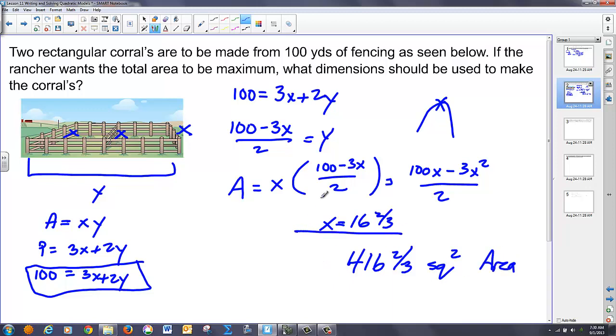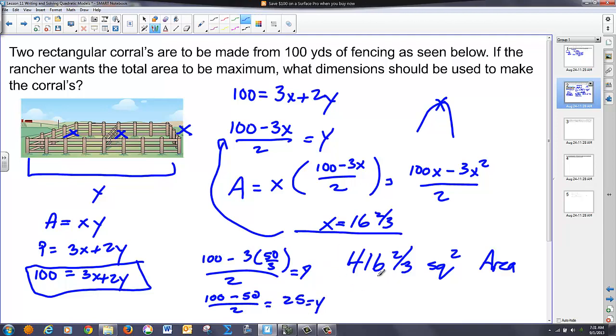They asked me for the dimensions so that's 16 and 2 thirds for the x and if I want the y I just have to plug that back in to this equation here. So what I have is I have 100 minus that's what 50 thirds, 3 times 50 over 3 over 2 and that gives me my y value. So I have 100 minus 50 over 2 or 25 for my y value. And those are my dimensions that give me a maximum area.